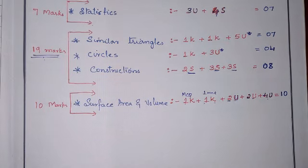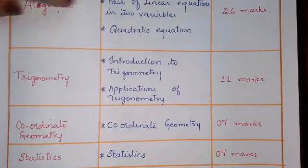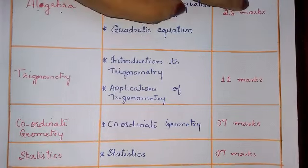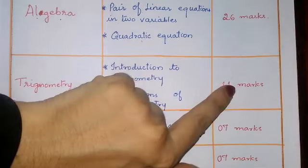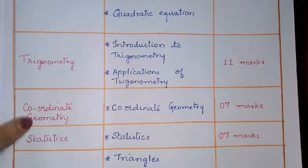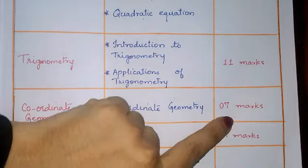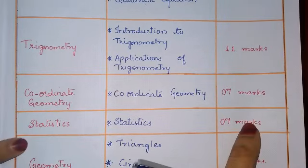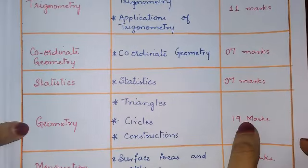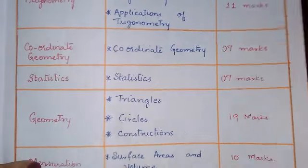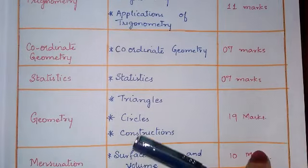To recap the marks allotted per theme: Theme 1 Algebra — 26 marks. Theme 2 Trigonometry — 11 marks. Theme 3 Coordinate Geometry — 7 marks. Statistics — 7 marks. Geometry — 19 marks. Surface Area and Volume — 10 marks.